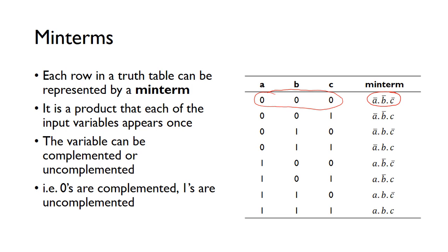In the second row, only A and B are zero, so in this expression only A and B have the bar on. We just go through, and every time we see a zero we put a bar over the top. Each min term is always A dot B dot C, and when we have a zero we put the bar over the top. This gives us the min term for each row.